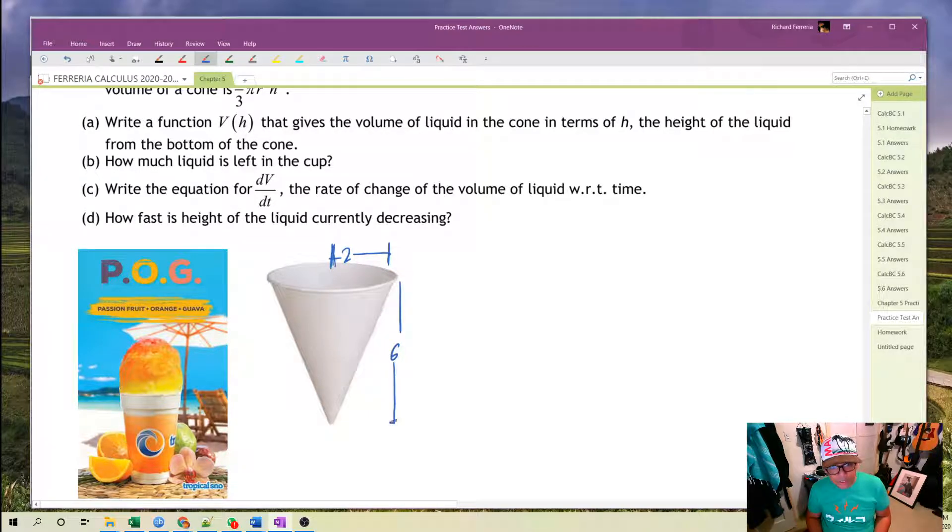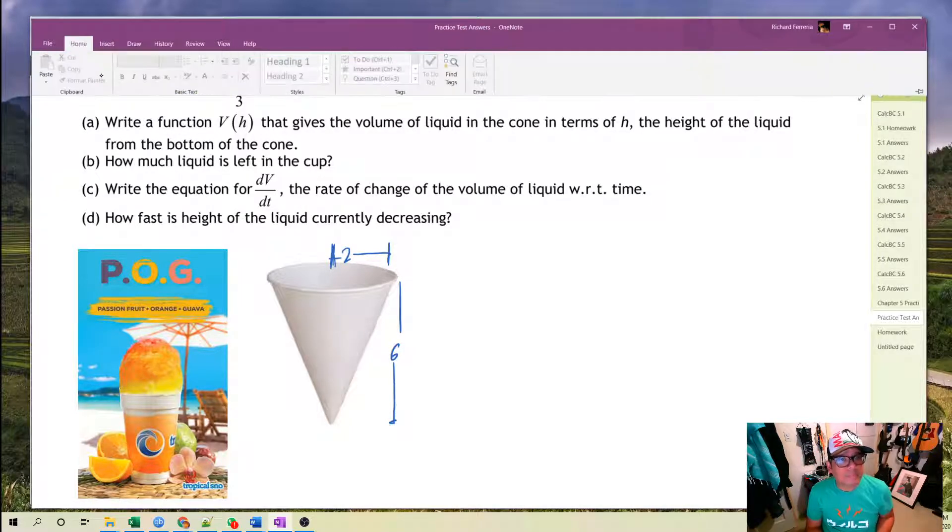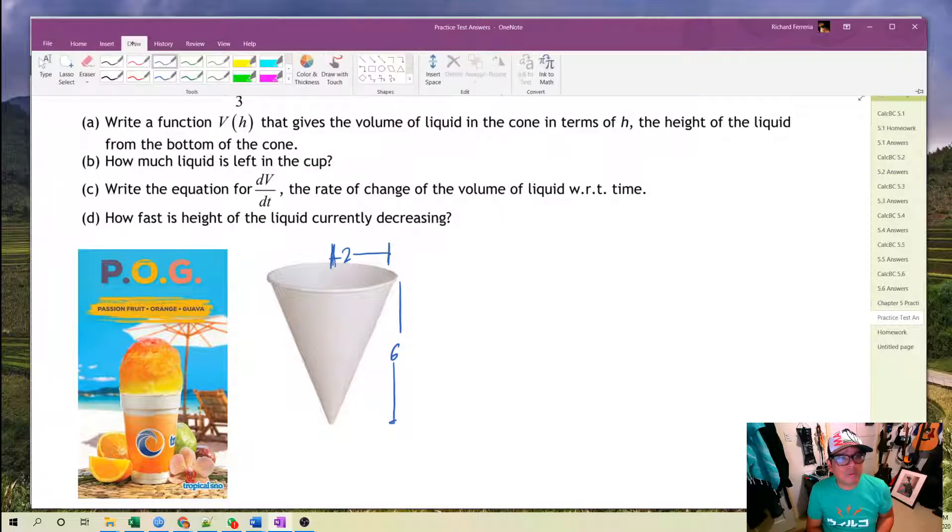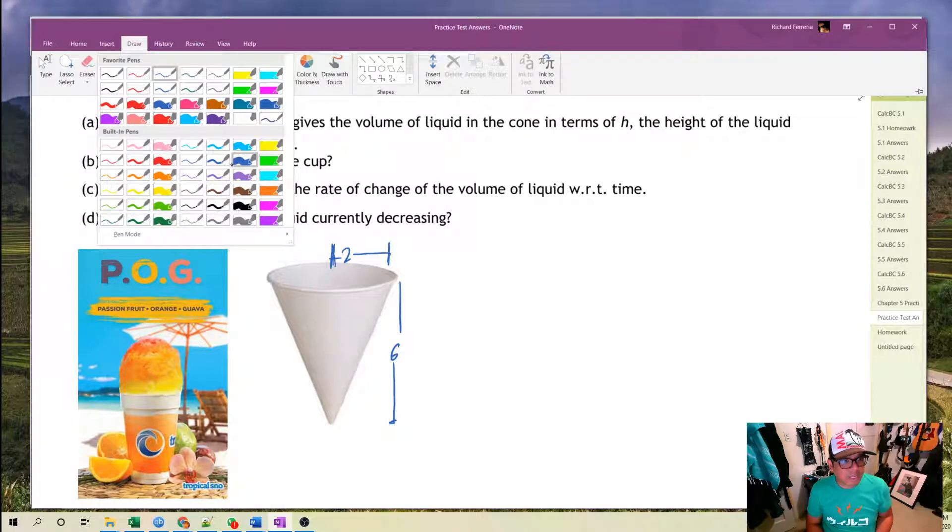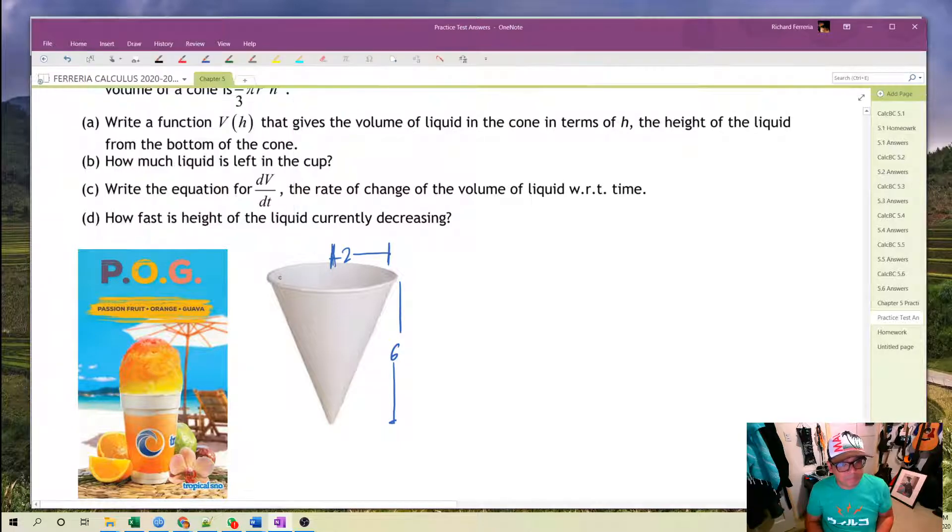So this is what we do. The mixture inside the cone, let's just say it comes up to over here. Maybe I should use a more POG appropriate color. What color can we use? Okay, let's use this orange one. All right, our POG comes up to right about here.